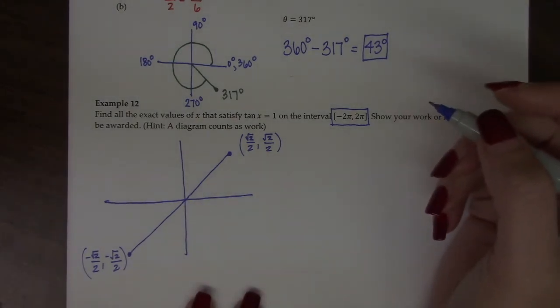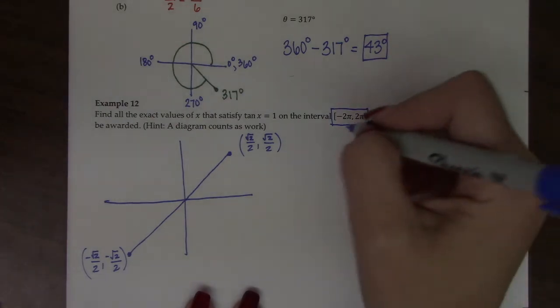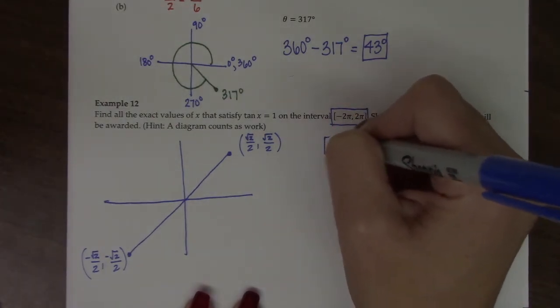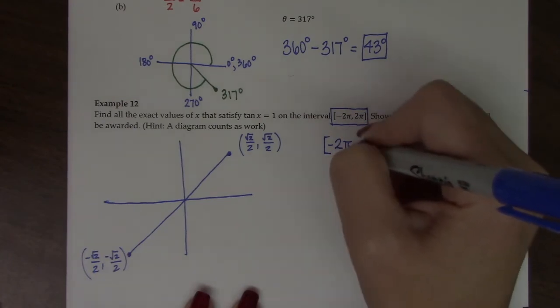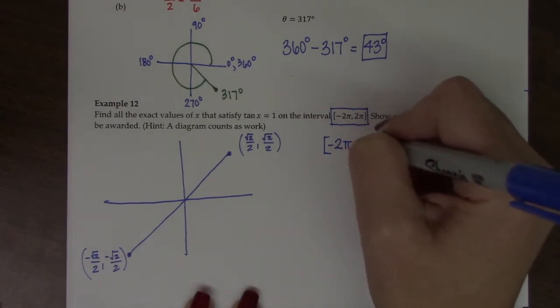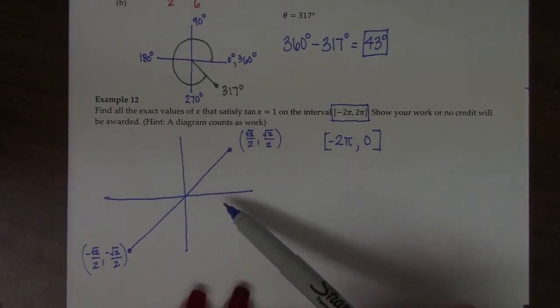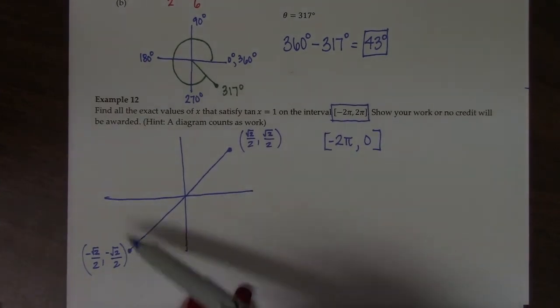So I actually think it's easier if we break this up into each respective revolution. So on the interval negative 2π to 0, I'm going to go backwards around my circle. And so all my angle measures are going to be negative because I'm traveling in the negative direction.